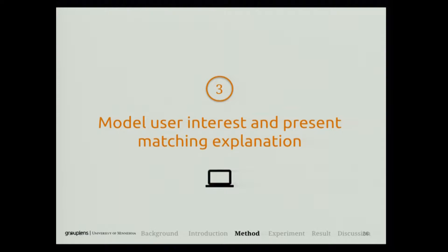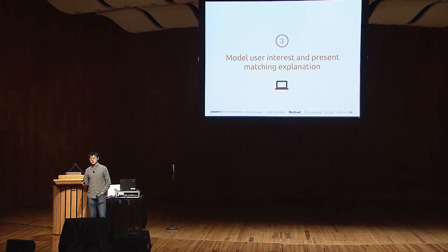In the third step, we model users' interests on these key topical aspects and present them the matching explanations. Without going into further details, the general idea is to look at the tags of each movie and the ratings the user gave, then aggregate that information into a user genome — essentially, for each user, which topic aspect they're most interested in. We then show the topical aspect that ranks highest on the user genome.